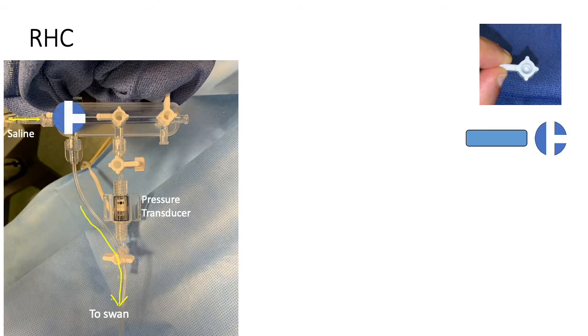Speaking of valves, this is how the valves are currently aligned. Now with this setup, you will see that the pressure transducer is effectively communicating with the air. This is how we zero our transducer.